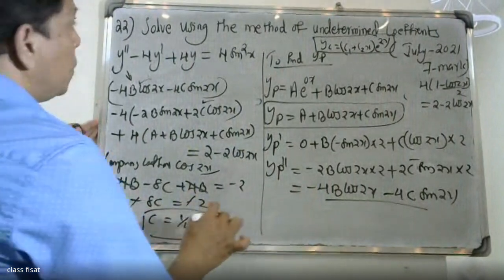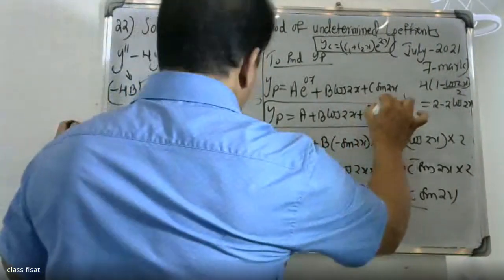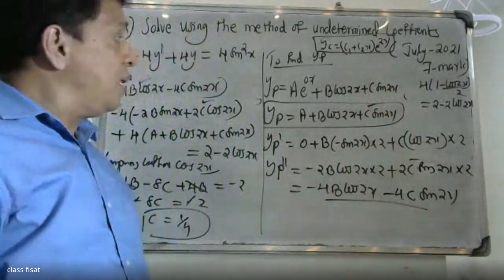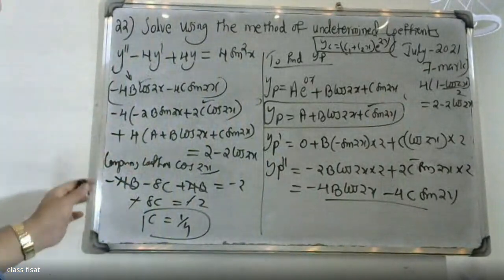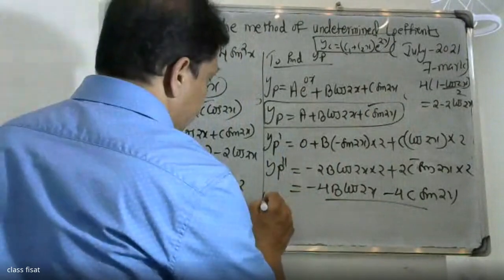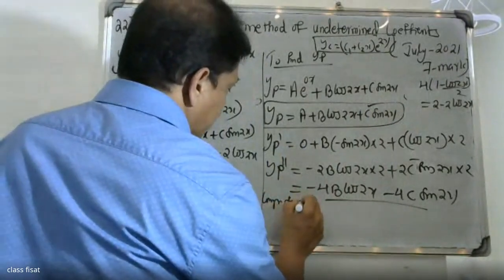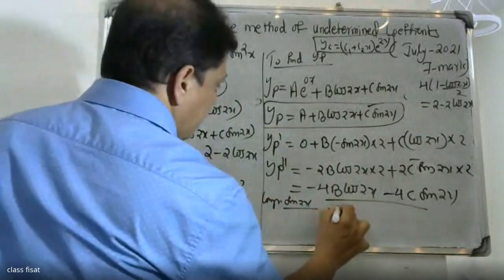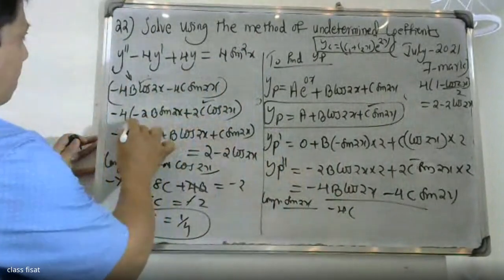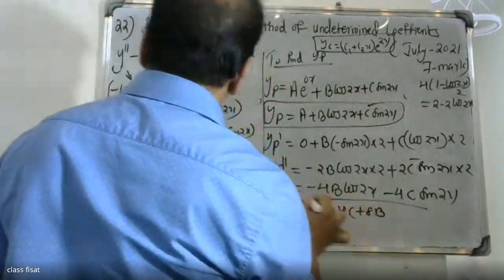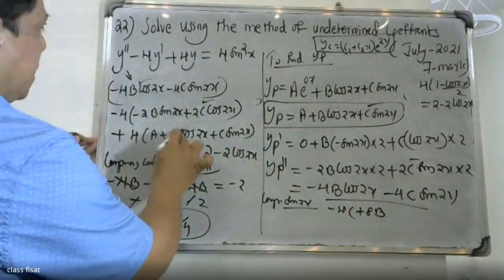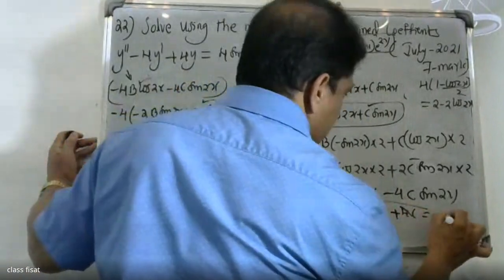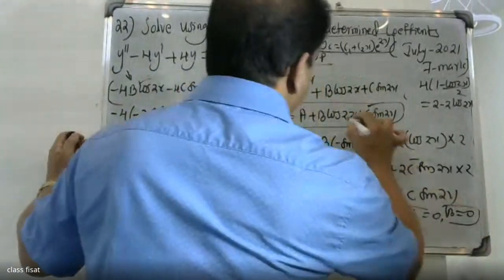Comparing coefficients of cos2x: -4B - 8C + 4B = -2, which gives C = 1/4. Comparing coefficients of sin2x: -4C + 8B + 4C = 0, which simplifies so that B = 0. Therefore B = 0 and C = 1/4.